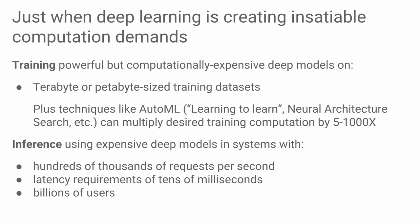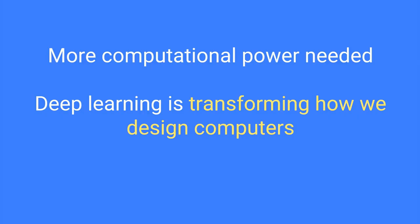And for inference—once we have a trained model that works well—those systems need to be deployed in many places at very high volumes of requests, in low-power environments, sometimes for mobile phones or even smaller devices. Some inference requests in data centers deal with hundreds of thousands of requests per second for computationally demanding models. So training and inference have remarkable performance demands, and we're not getting the performance improvements we've been used to. We really need more computational power than we have today.